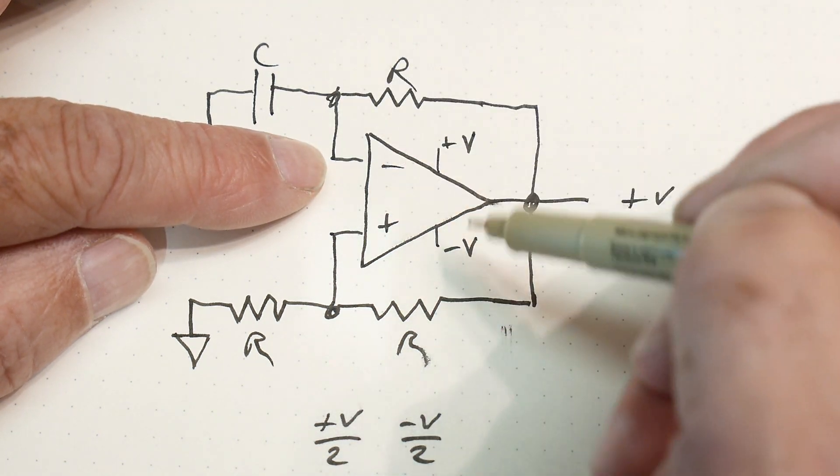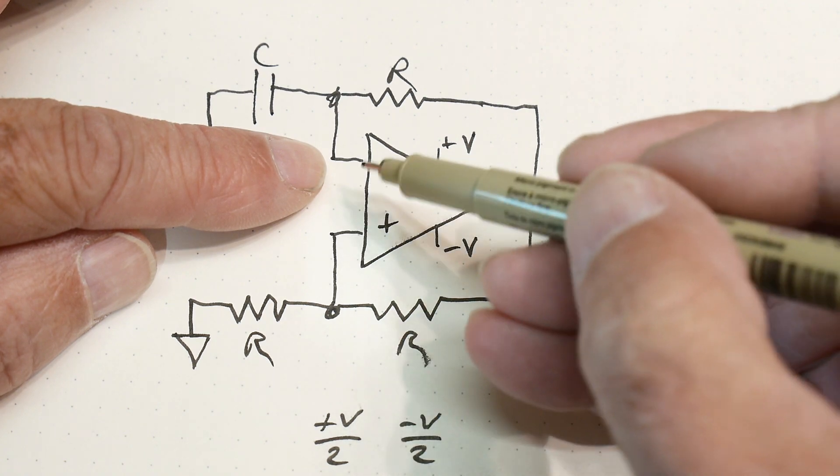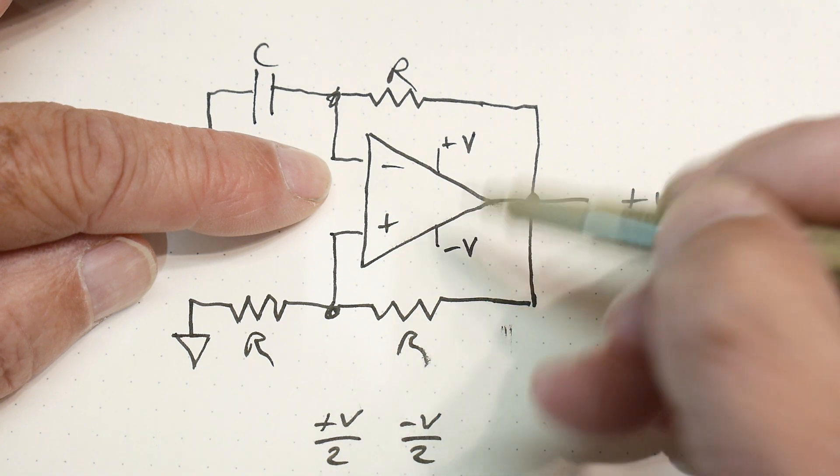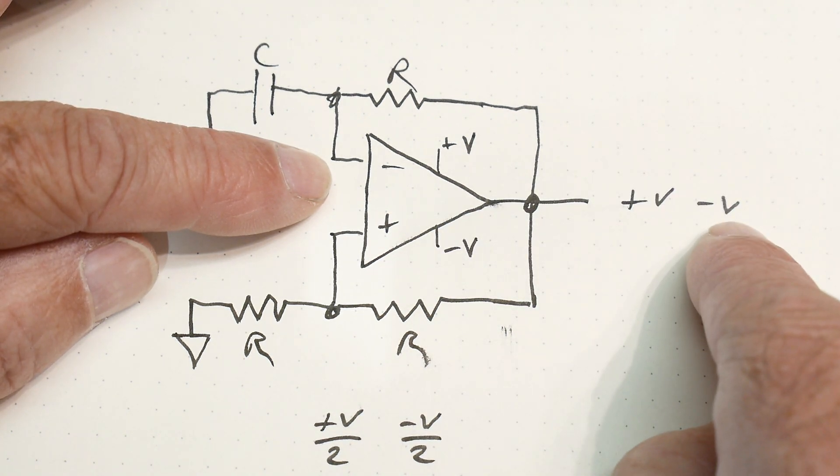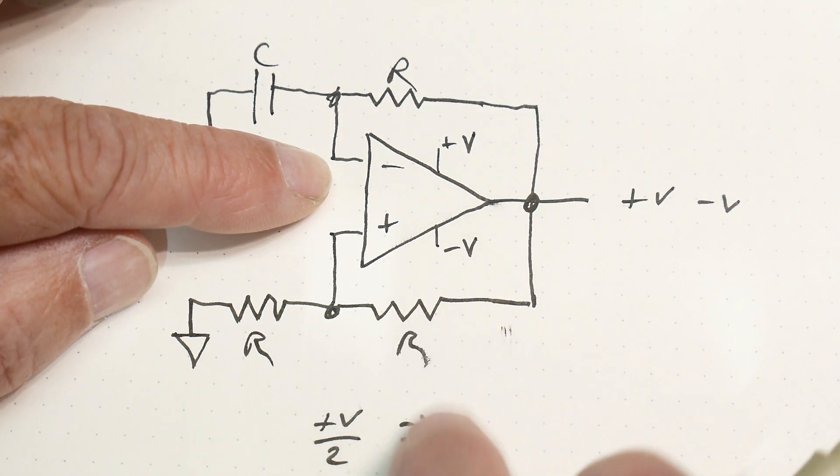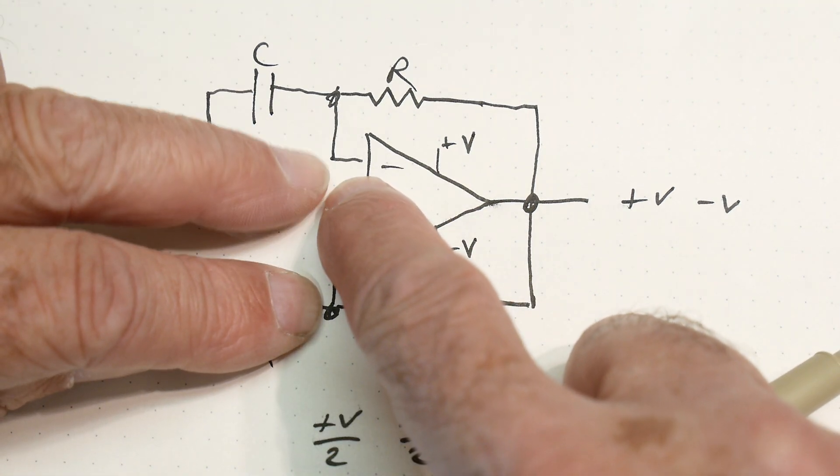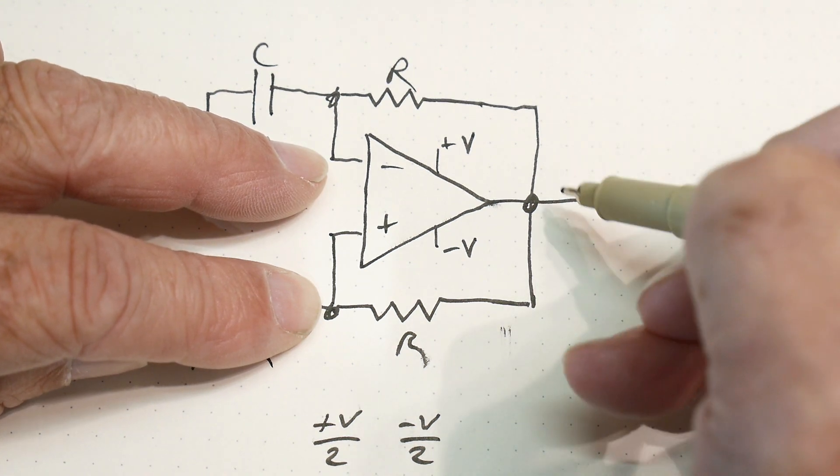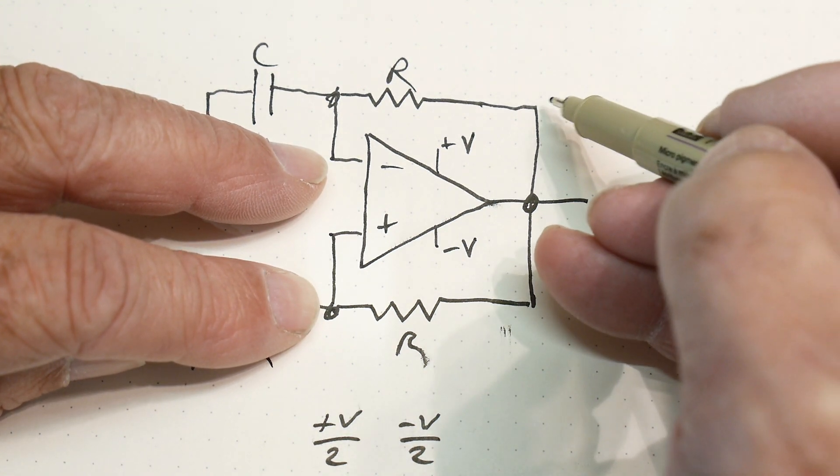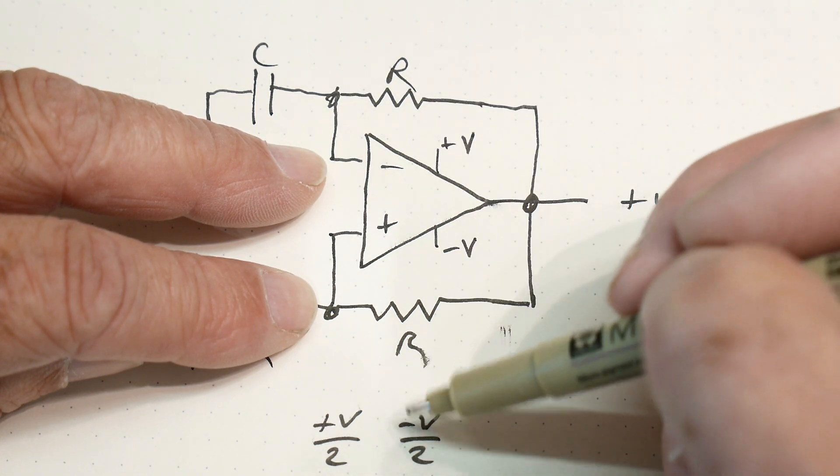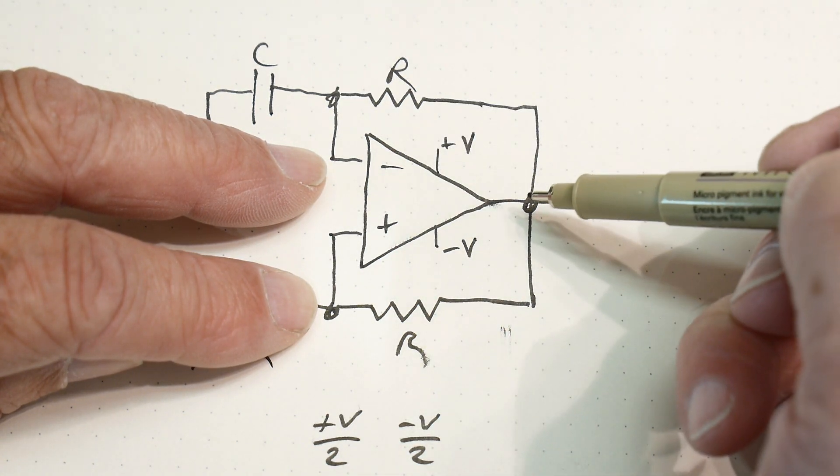And when that capacitor finally reaches plus V over 2, then the op amp is going to see the negative input bigger than the positive input. So it's going to flip state. And this is going to become minus V. And then this point will be minus V over 2. But the op amp wants this to be minus V over 2. So the minus V comes in here and starts discharging the capacitor until it reaches minus V over 2. And then it'll flip states again.